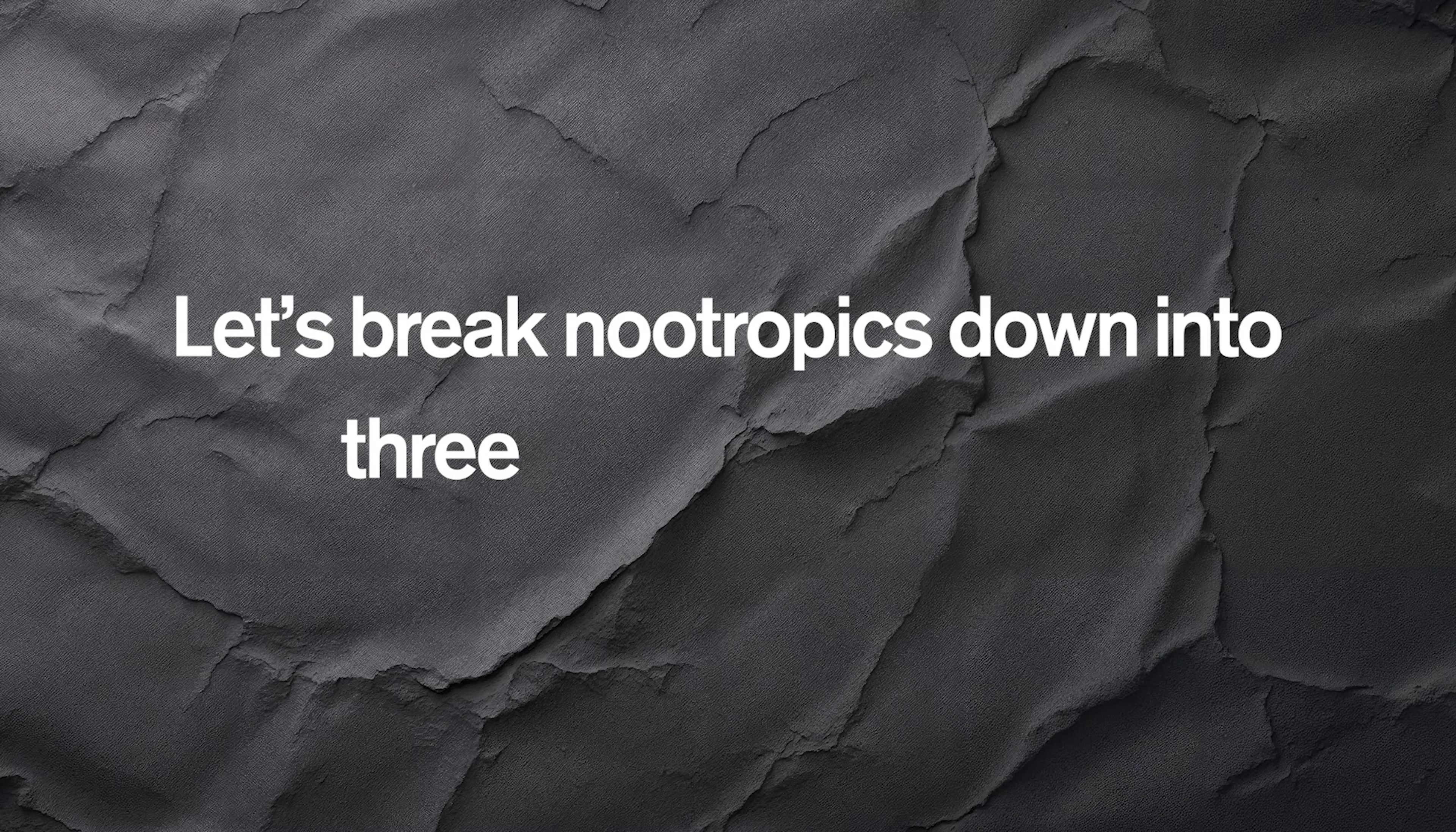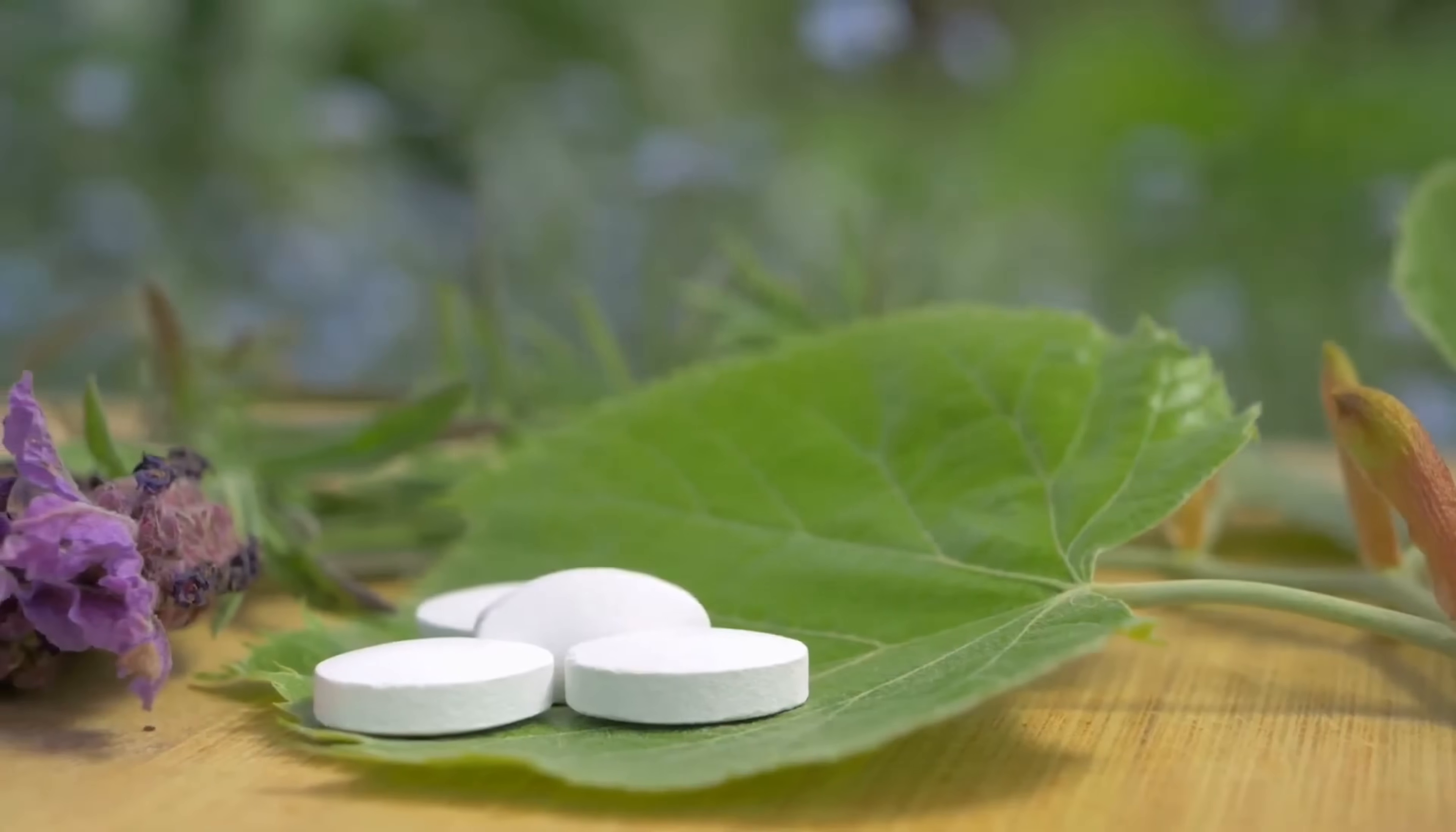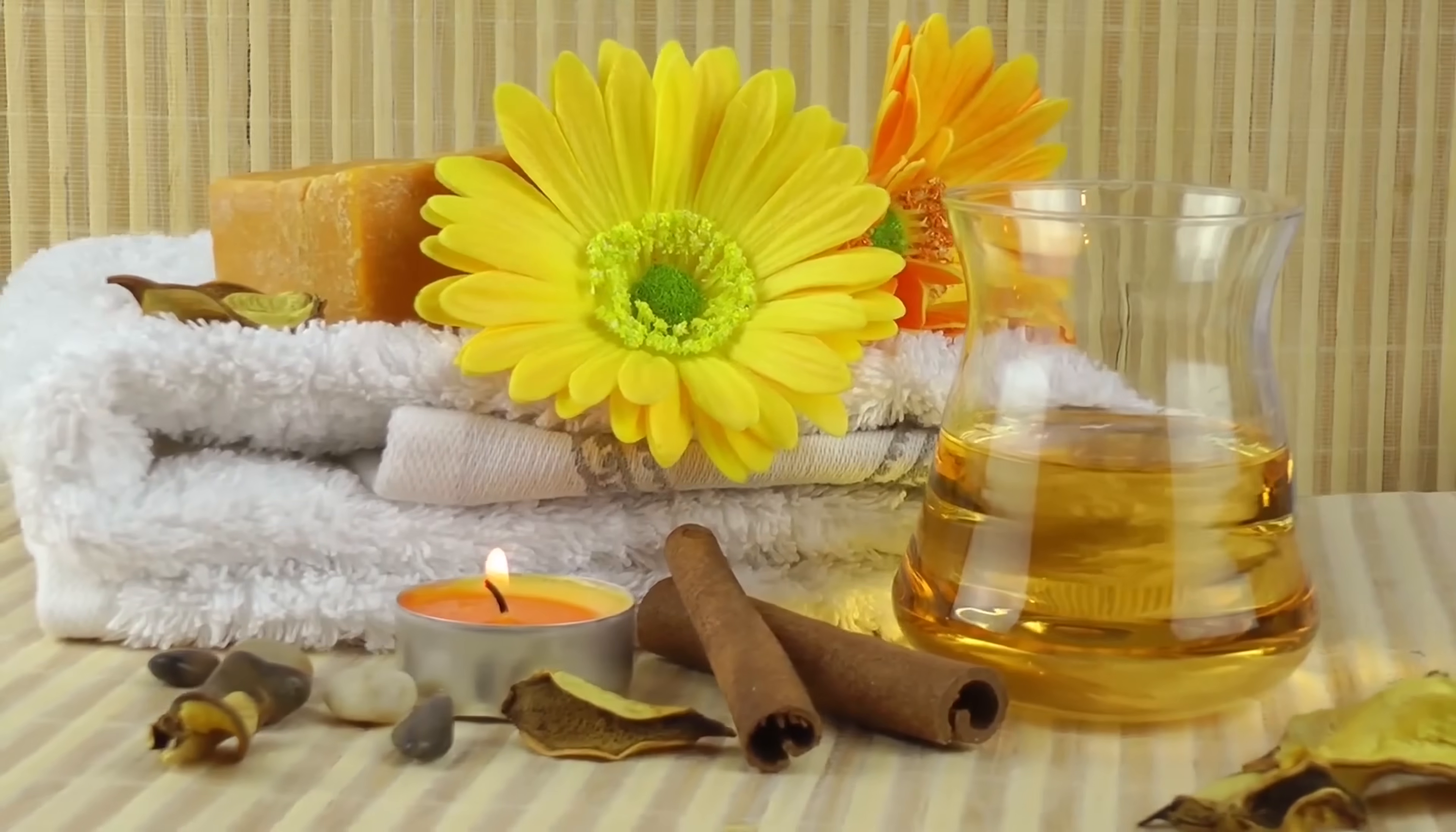Categories of nootropics. Let's break nootropics down into three major categories, each with its own unique benefits and risks. One, natural nootropics. These are derived from herbs, plants, fungi, and natural compounds. Many have been used for centuries in traditional medicine systems, like Ayurveda and traditional Chinese medicine. Here are some of the most popular.